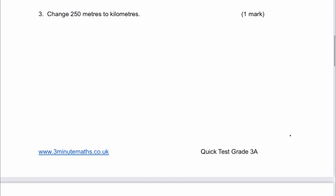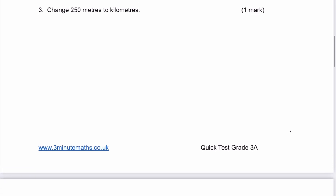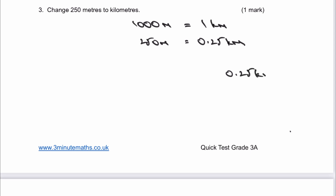Question 3: change 250 metres to kilometres. There are 1,000 metres equal to 1 kilometre. For 250 metres, if I divide by 1,000, I get 0.25 kilometres. That's the answer to question 3.